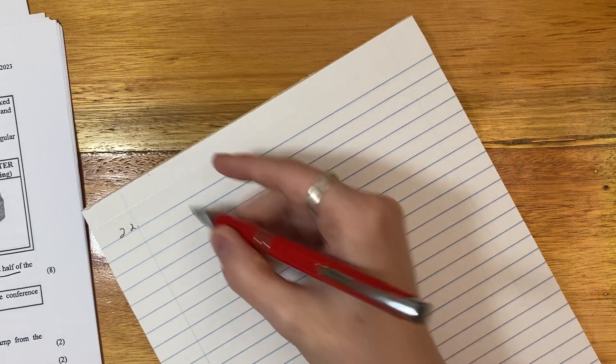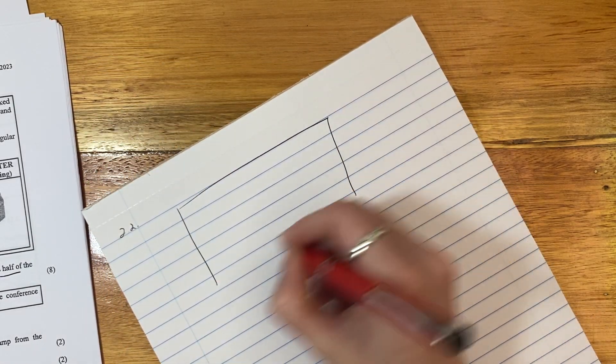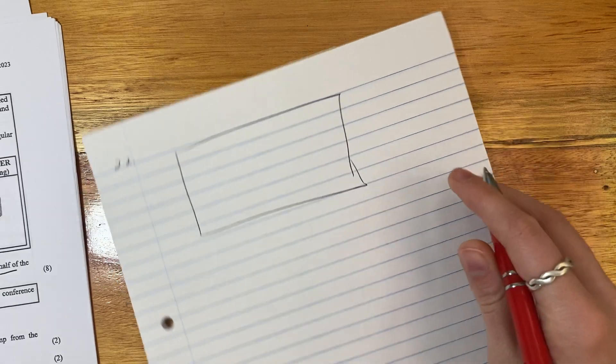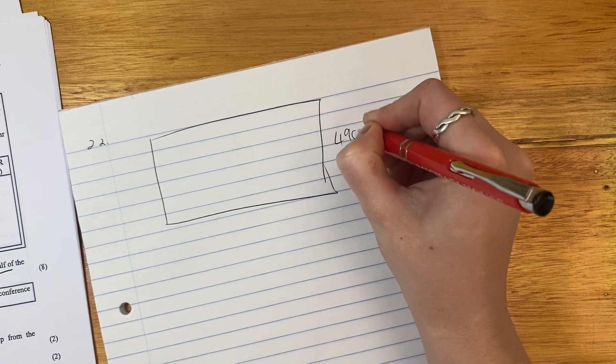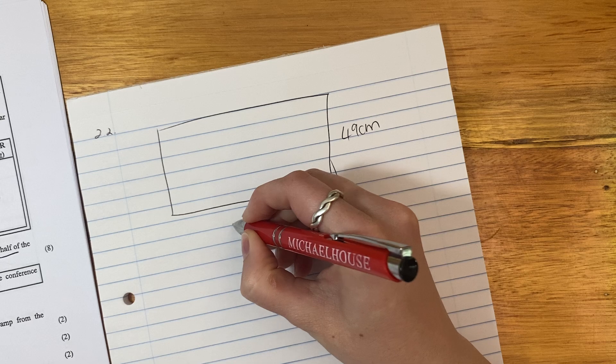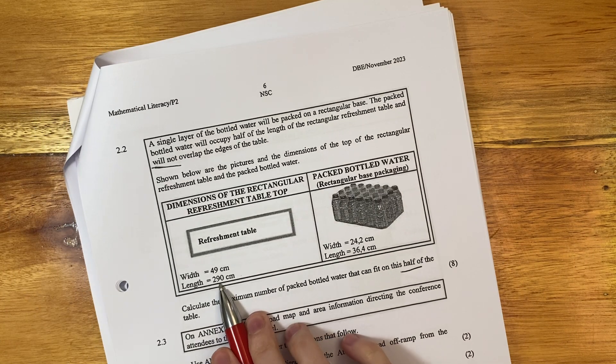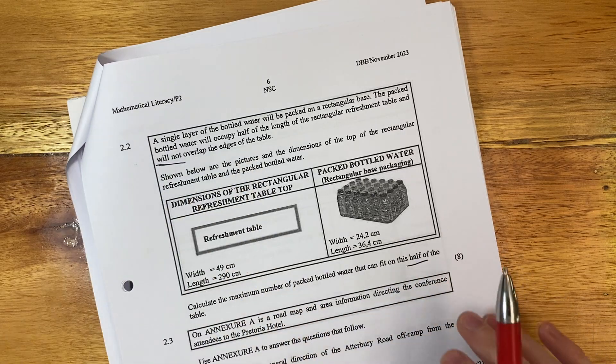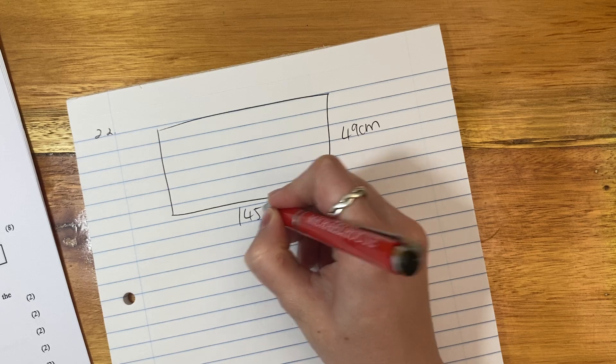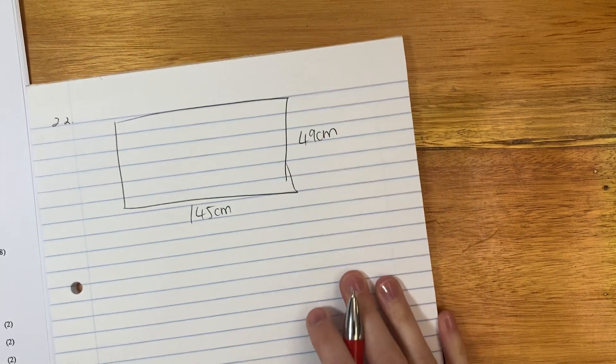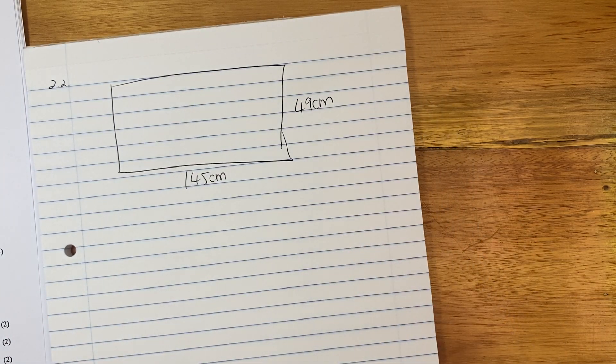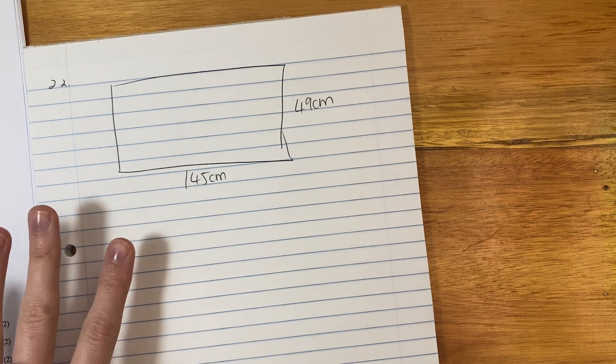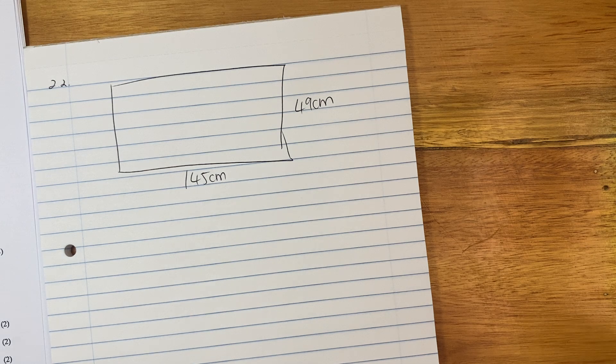It says calculate the maximum number of packed bottled waters that can fit on half of the table. So half the table. Let's actually just draw this. I think it will help us. There's the table. It is 49 centimeters wide, but I've only drawn half the table, and half the table in length is going to be 290 divided by 2, so it's 145. I haven't drawn the whole table, only half because that's what we're working with for the water. I guess the rest of the table will have soft drinks and alcohol or something. But this is what we're working with, where we want to put the maximum amount of water.